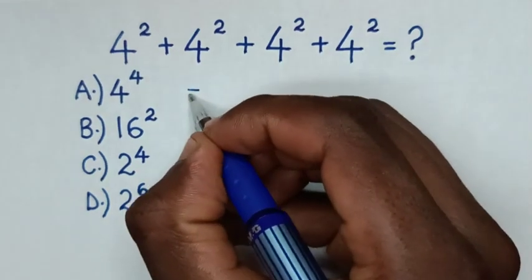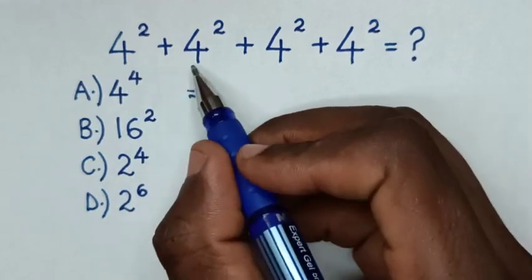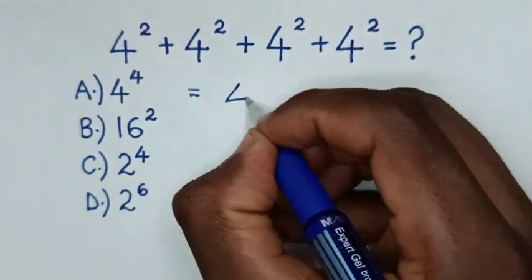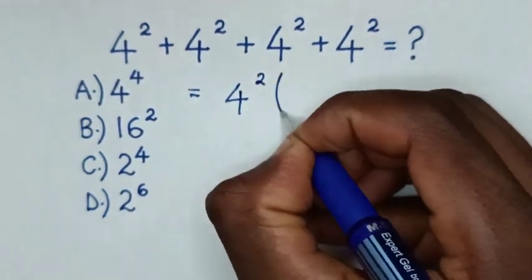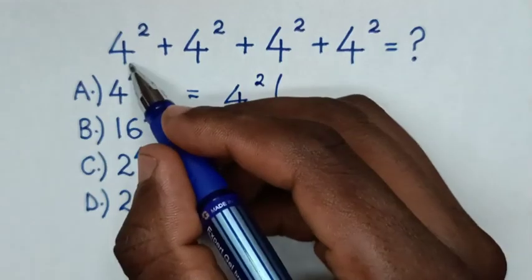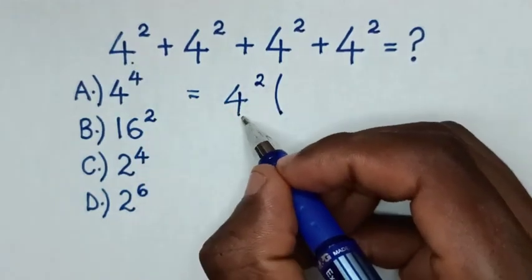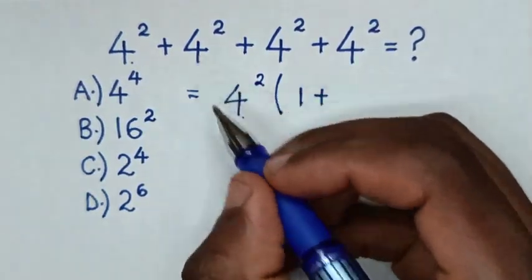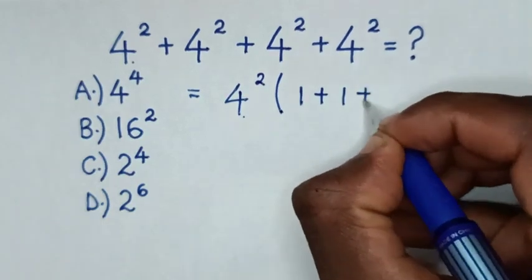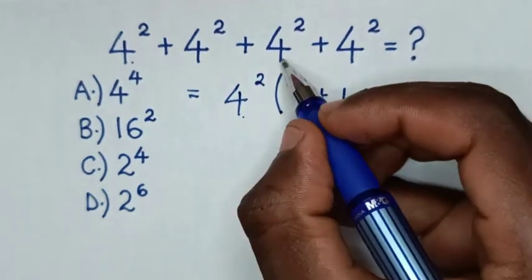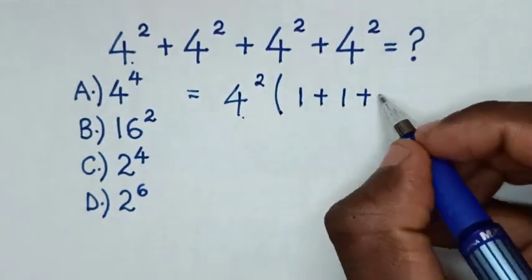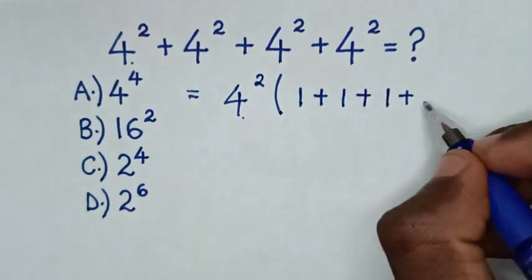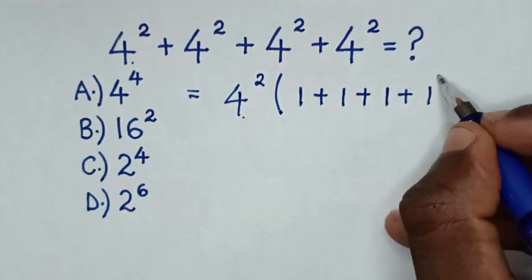It will be equal to: 4 power of 2 is common, so take 4 power of 2 out of the bracket. Then 4 power of 2 divided by 4 power of 2 is 1, plus 1, plus 1, then close bracket.